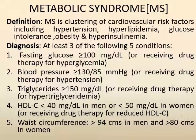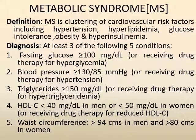The five conditions are: (1) fasting blood glucose equal to or above 100 mg/dL, or receiving drugs for diabetes; (2) blood pressure above or equal to 130/85 mmHg, or receiving drugs for hypertension; (3) triglycerides equal to or above 150 mg/dL, or receiving drugs for hypertriglyceridemia; (4) HDL cholesterol below 40 mg/dL in men or below 50 mg/dL in women, or receiving drugs for reduced HDL; (5) waist circumference above 94 cm in men or more than 80 cm in women. Three of these five criteria diagnose metabolic syndrome.